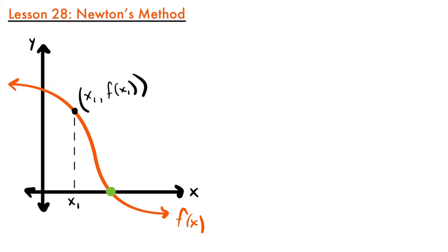But sometimes you're going to come across functions where that's going to be difficult to do. Either you're not going to be able to easily factor your function, or you're just not going to have nice values for your zeros. You would find that x is equal to 1 or x is equal to 3, a very nice number. But in many cases, functions do not have nice x-intercepts — they're going to be numbers with a lot of decimals.